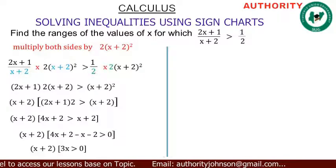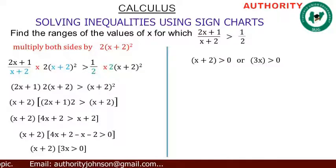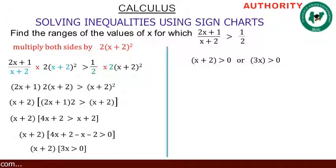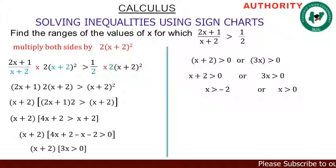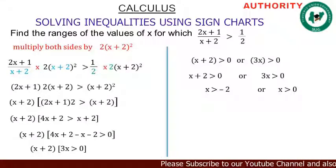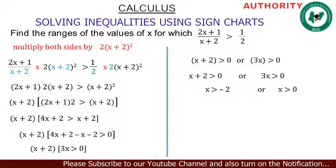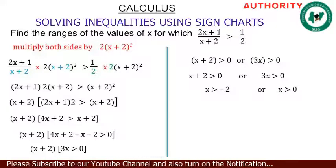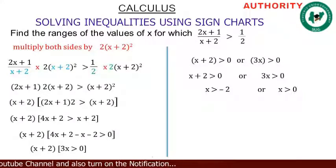So we have (x + 2)(3x) > 0. Let's take them individually: (x + 2) > 0 and 3x > 0. From the first: x > −2. From the second, divide both sides by 3: x > 0. Therefore the values are x > −2 and x > 0.